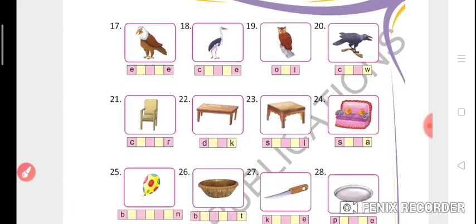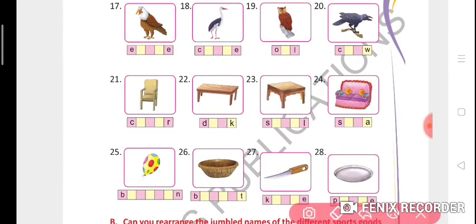Seventeenth, eagle: E-A-G-L-E. Eighteenth, crane: C-R-A-N-E. Nineteenth, owl: O-W-L. Twentieth, crow: C-R-O-W. Twenty-first, chair: C-H-A-I-R.